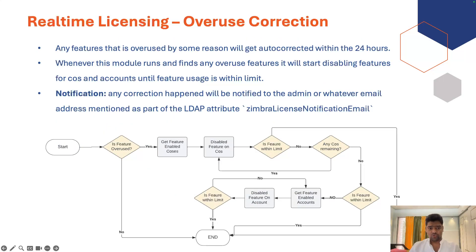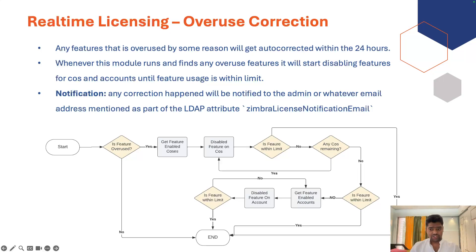Another important component is overuse correction. This new usage correction module has been introduced: if any feature is overused for some reason, it will be auto-corrected within 24 hours. When this module finds an overused feature, it starts disabling the feature at the COS and then account level based on its internal algorithm. It also sends out a notification to the admin at whatever email address is set as the LDAP attribute `zimbraLicenseNotificationEmail`. If you want to change this notification address, you can update that LDAP attribute value. This module will continue to be enhanced in upcoming releases for more precise auto-corrections.